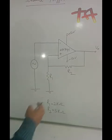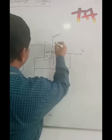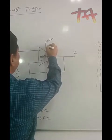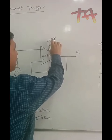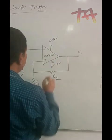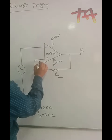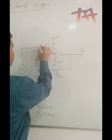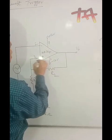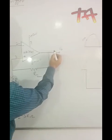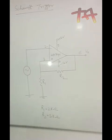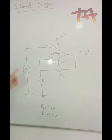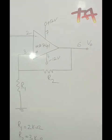One very important thing — these are the pin numbers. Pin number 7 should be connected to +12V, and pin number 4 should be connected to -12V. Pin number 2 is the inverting input, pin number 3 is the non-inverting input, and pin number 6 is the output. Pins 1 and 5 are not connected.